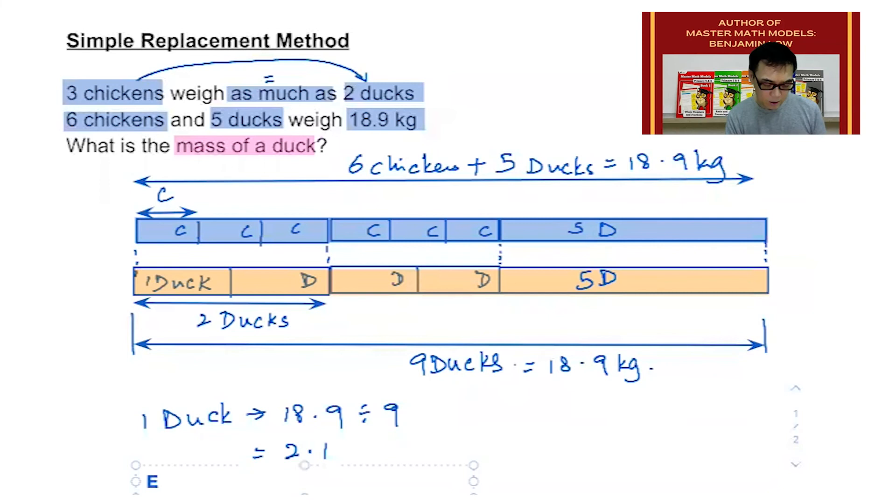Let me just put that down. Each duck weighs, or has a mass of, let's follow the question, 2.1 kilograms. And that is how you use the replacement method to convert chickens into ducks.